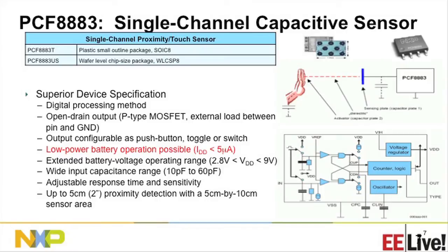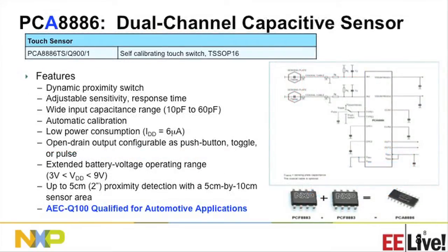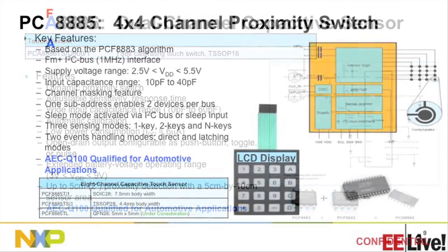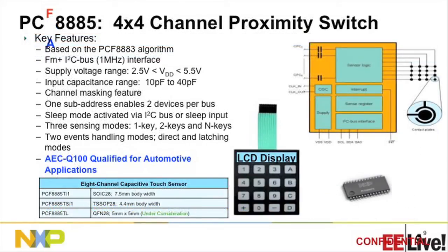What are some of the key parameters that drive this design? In this particular device, you see a couple of external capacitors. These are the capacitors that determine the operating conditions — how fast it's going to scan, how much difference of capacitance it needs to generate, what the threshold of capacitance is. All these parameters are decided by the external capacitors that you attach to the device. That's all it takes to make a simple touch or proximity sensor. This is the dual-channel device, and this is the eight-channel device that I'll talk more about to show how you can do 28 touches.